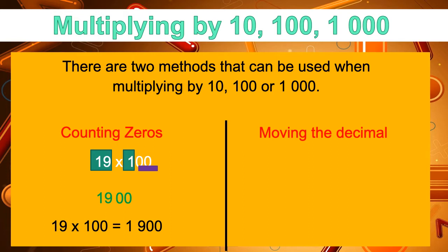Let's look now at the Moving the Decimal Method. Our example is 26 times 1,000. We begin by looking at our first factor, which is 26, and we write that down. Next, it's time to move the decimal point. But where is the decimal point in this number? Well, because this number is a whole number, the decimal point is found at the back of our number. Once we identify our decimal point, we now need to move it. But how many spaces? That's where our 1,000 comes in. Looking at the zeros in the number 1,000 — how many zeros are there? There are three zeros.